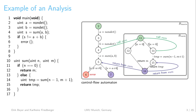A program analysis that applies procedure summaries is called interprocedural, because procedures can be analyzed separately and verification results are merged together afterwards. In the next few minutes we will define such an interprocedural program analysis based on well-known components like the CPA concept.